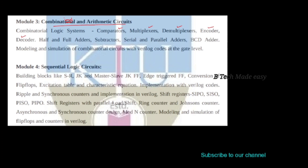Comparators compare two expressions. Multiplexers have many inputs and a single output — that is why we use a multiplexer. A demultiplexer is the opposite: it takes a single input and produces many outputs.